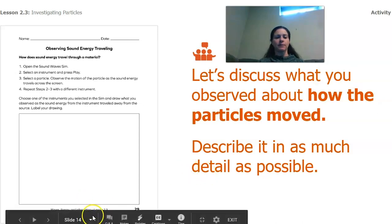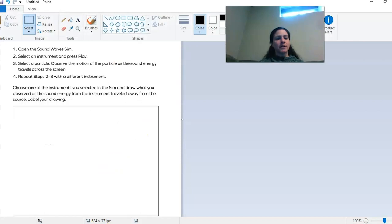Now let's think about what we saw about the particle moving, and we're going to describe it in as much detail as possible. So for me, I'm going to draw my particle. I saw the particle do a lot of different things. To be honest, at first I saw the particle kind of move this way, and then move this way, and then move this way, and then move this way.